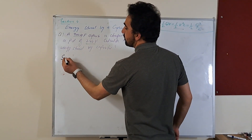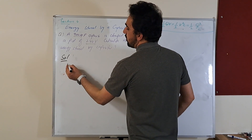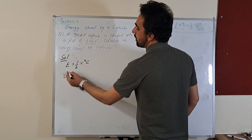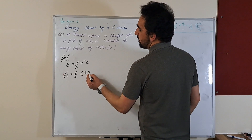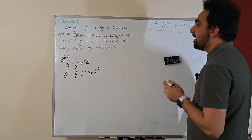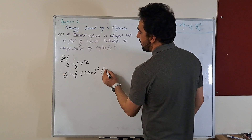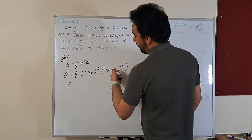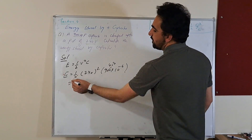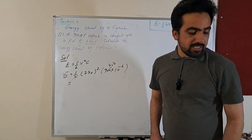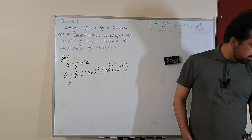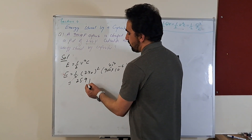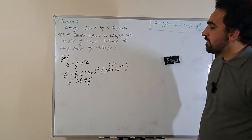Solution: energy stored is equal to 1/2 V squared C. That is 1/2, voltage is 240 squared, and capacitance is 900 times 10 to the power minus 6. Solving this, we get 450 multiplied by 240 squared. The final value is 25.9 joule, or approximately 26 joule of energy.